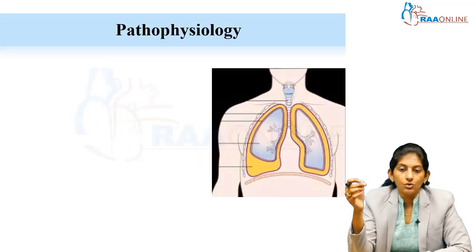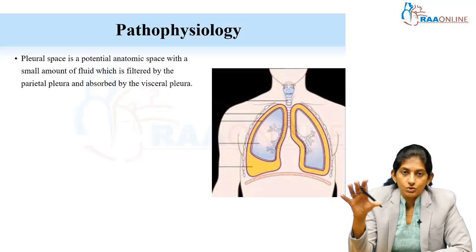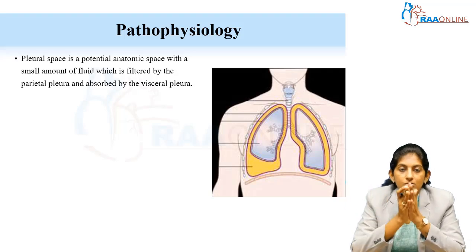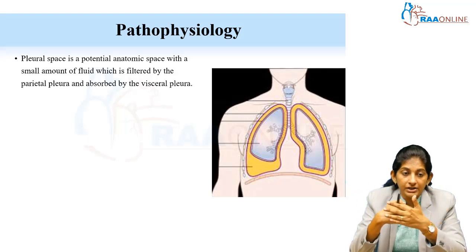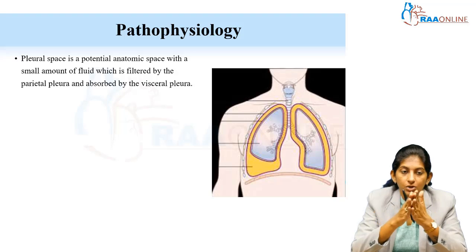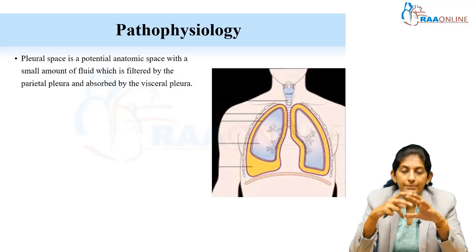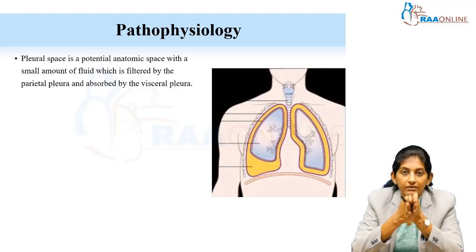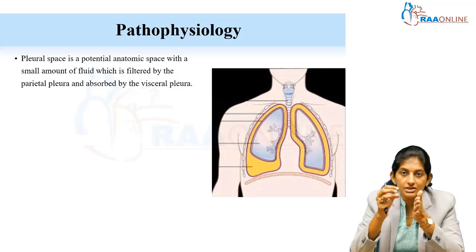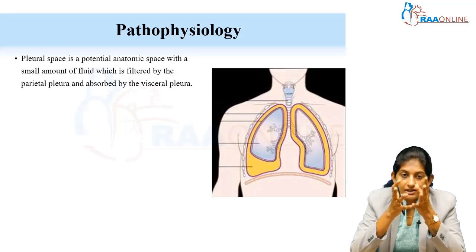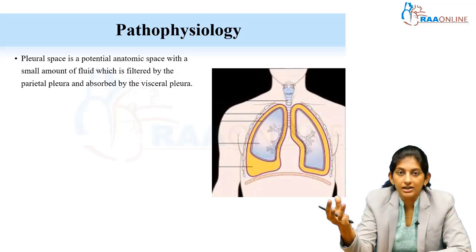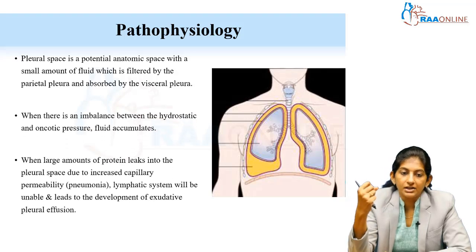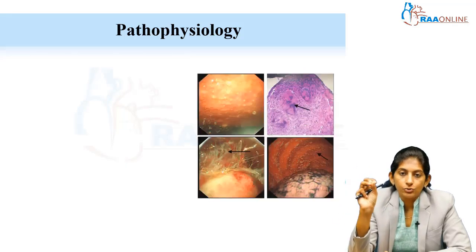Regarding the physiology of the pleural space: it is a small anatomical space with a very small amount of fluid. Whatever is filtered by the parietal pleura is absorbed by the visceral pleura. When there is extensive inflammation, there is increased transudation. The space expands, filtration becomes inadequate, and increased hydrostatic pressure results in pleural effusion — the fluid starts accumulating as the lymphatic system is unable to clear everything.